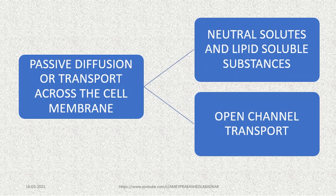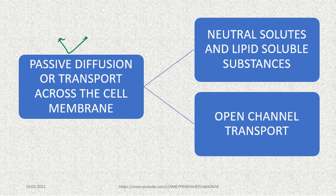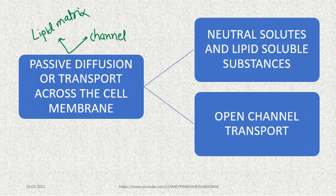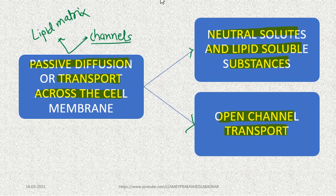Moving further, passive diffusion can take place through the lipid matrix of the membrane or with the help of channels — two points to remember. There are two types: one involves neutral solutes and lipid-soluble substances; the second is open channel transport. Both fall under passive diffusion and transport across the cell membrane.